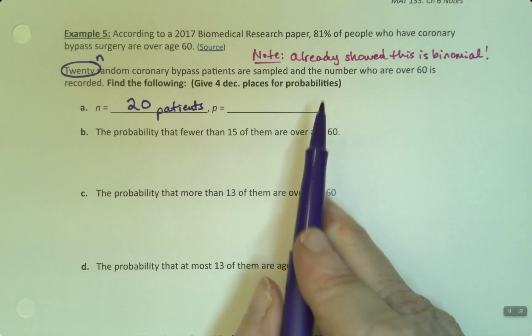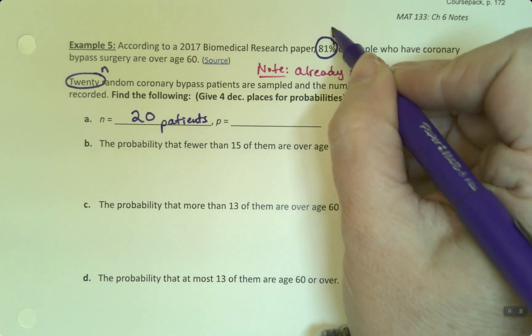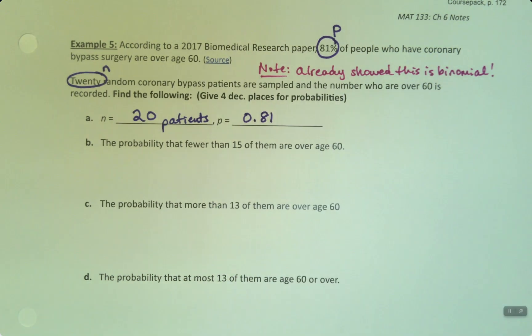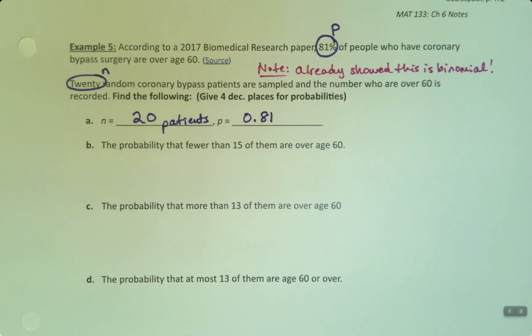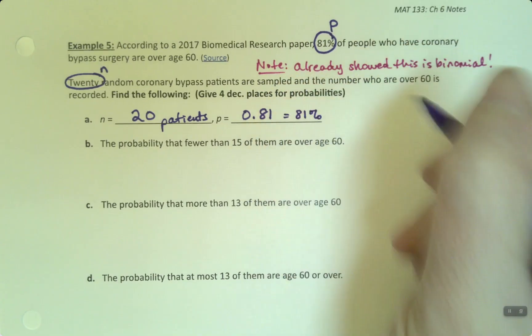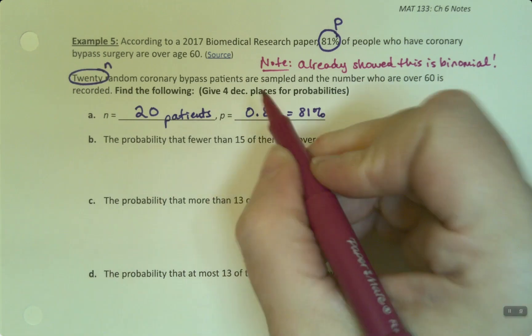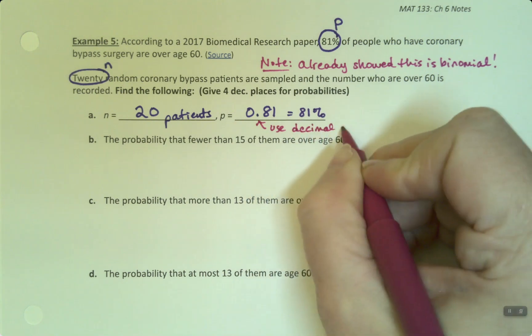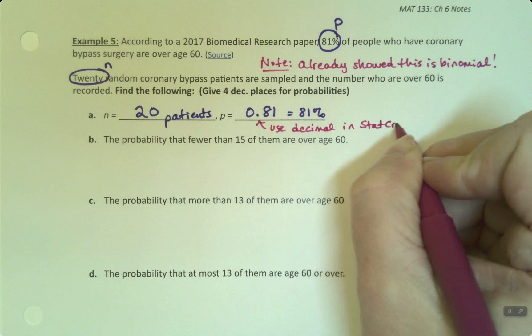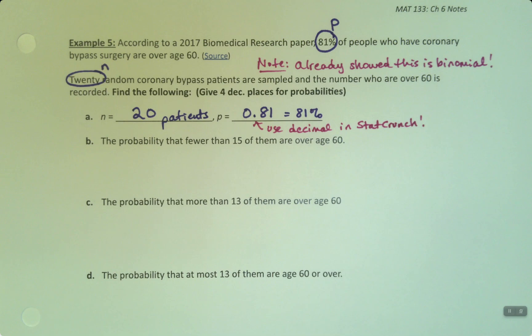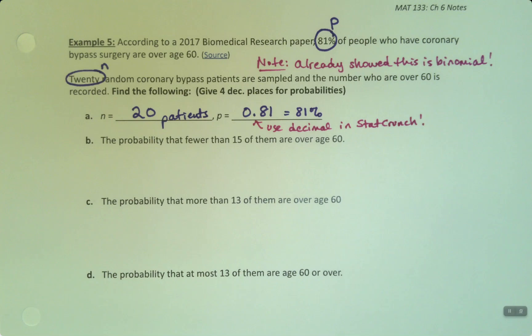Always helps to have a little bit of a unit there to kind of keep in mind what's going on. And the probability of success is right here, that's P. Now, it is 81%, but it's not useful to us. We can't put it into StatCrunch that way, so we change it to a decimal, 0.81, which is 81%. I'll just make a note. Use the decimal in StatCrunch and in the calculator if you're using the calculator. The percent won't do you any good. As a matter of fact, it will give you an error if you try to use the percent. The decimal is the percent, it's just written a different way.